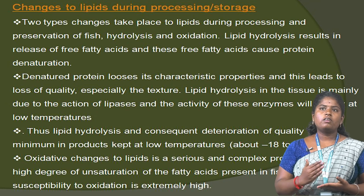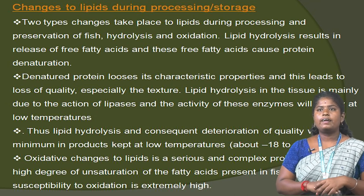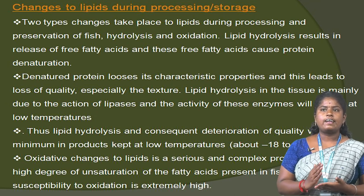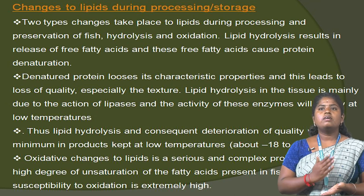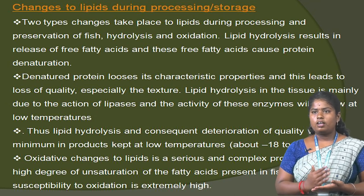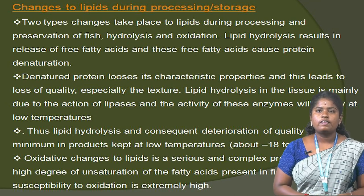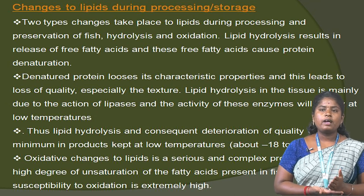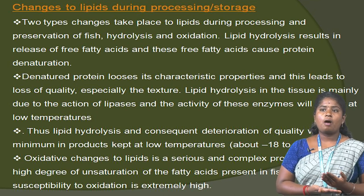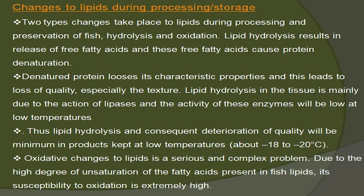Next, we will see about the changes to lipid during processing or storage. Two types of changes take place in lipid during processing and preservation of fish: hydrolysis and oxidation. Lipid hydrolysis results in the release of free fatty acids, which cause protein denaturation. Denatured protein loses its characteristic properties, leading to loss of quality, especially texture. Lipid hydrolysis in tissues is mainly due to the action of lipases, and the activity of this enzyme is low at low temperature. Thus, lipid hydrolysis and consequent deterioration of quality will be minimum in products kept at low temperature, around -18 to -20 degrees Celsius.